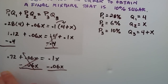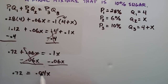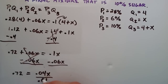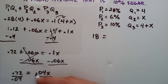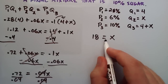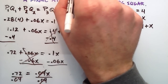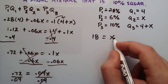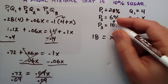So 0.72 equals 0.04X. We simply divide both sides by 0.04 to get X by itself. 0.72 divided by 0.04 gives us 18, and 0.04 divided by 0.04 gives us 1, so X equals 18. We defined X to be the quantity of mixture 2 in pounds. So now we know the quantity we need to add: 18 pounds of the 6% mixture. That's our answer.